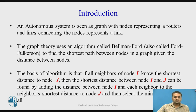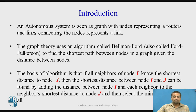The basis of this algorithm is very simple. If all the neighbors of node i know the shortest distance to node j, then the shortest distance between node i and j can be calculated by adding the distance from node i to each neighbor and the neighbor's shortest distance to node j, then selecting the minimum among all.